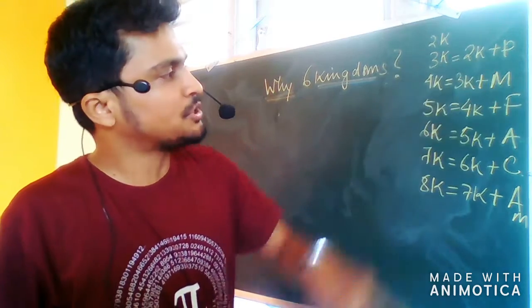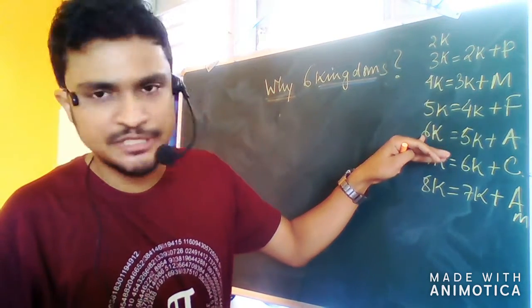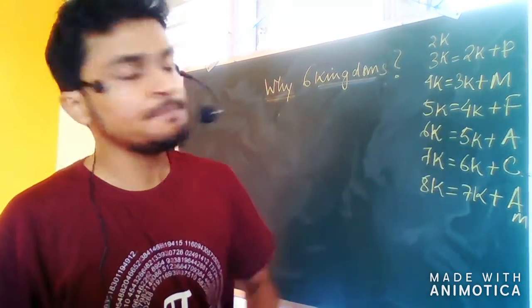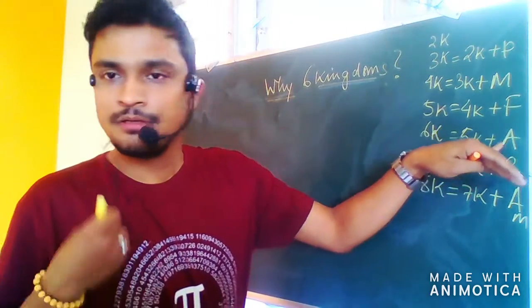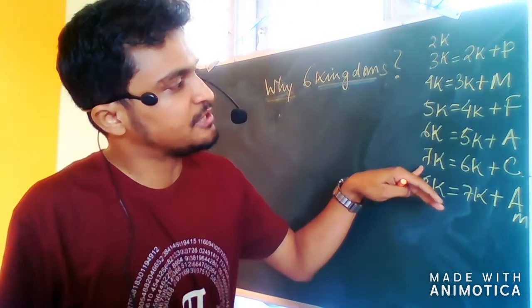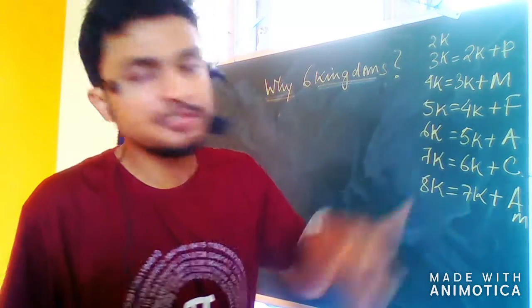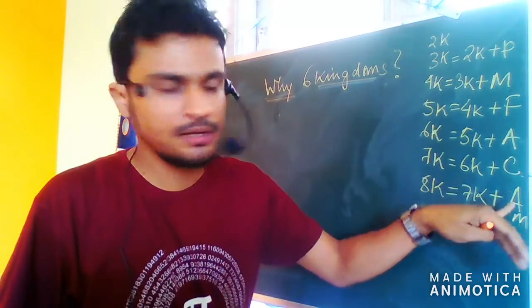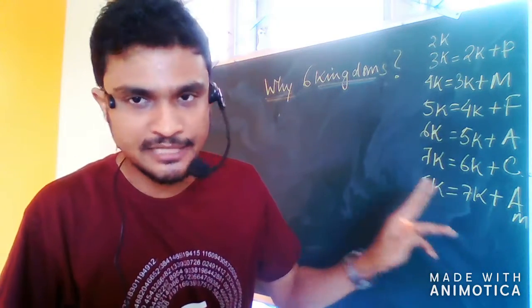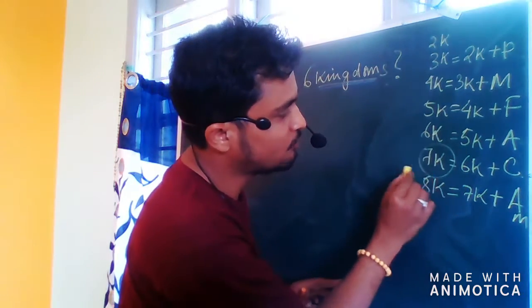Three kingdom was two kingdom plus Protista. Similarly, we can move forward: six kingdom equals five kingdom plus Archaebacteria. Seven kingdom is six kingdom plus Chromista, and eight kingdom is seven kingdom plus Amoebozoa, which is now defunct and obsolete.